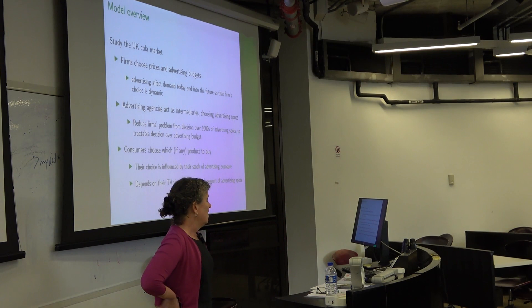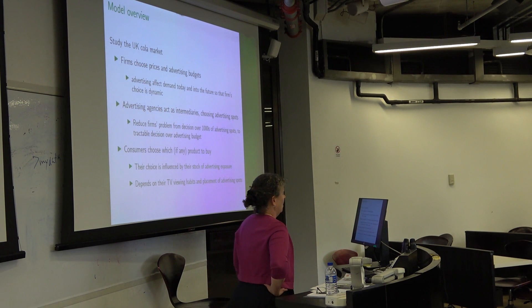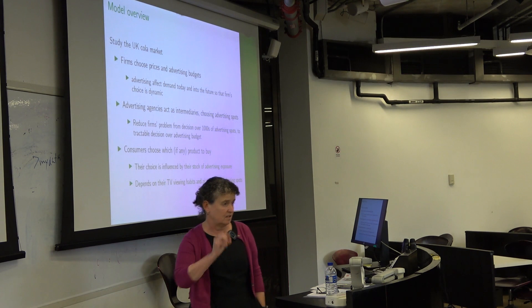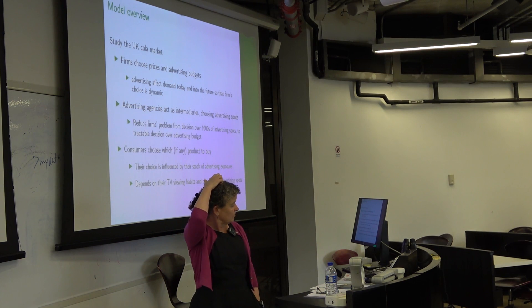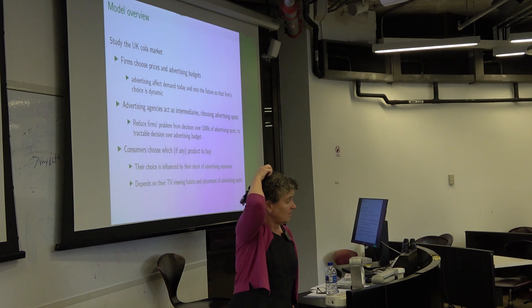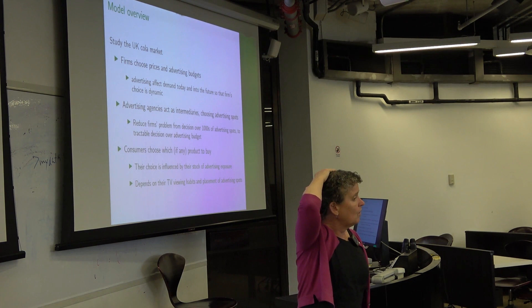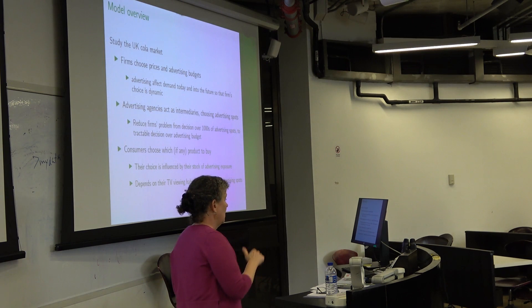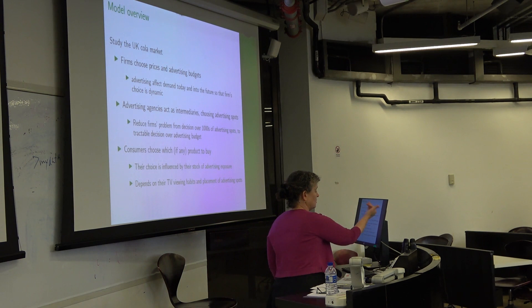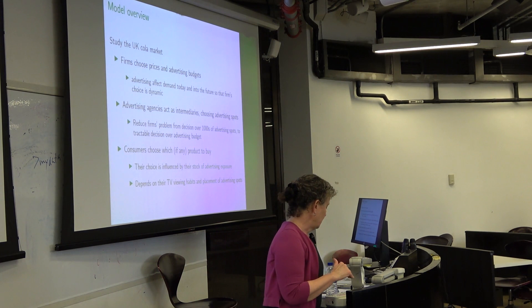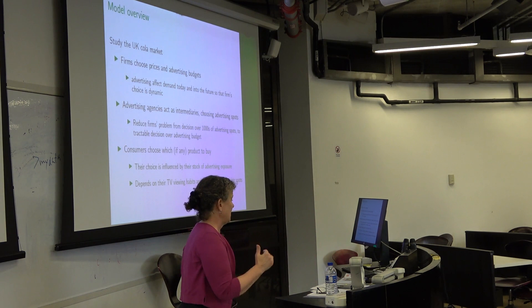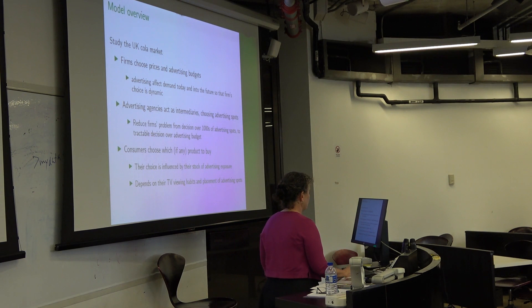We're going to study the UK cola market and allow firms to choose prices and advertising budgets. Advertising has a dynamic effect. Advertising agencies act as intermediaries that optimize individual advertising spots on behalf of the firm given its budget. This reduces the firm's problem from choosing over hundreds of thousands of advertising spots to simply deciding an advertising budget each period. That's a big restriction, and we get support for it from the advertising literature — Greg Crawford and others have done considerable work on how the advertising industry actually operates.